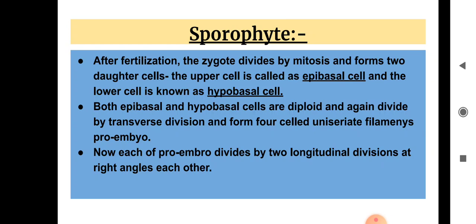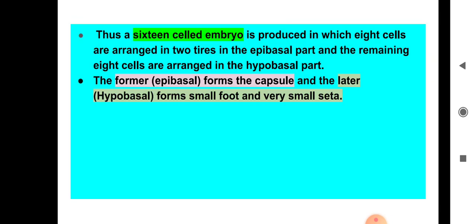To summarize development: transverse divisions produce the 4-celled uniseriate pro-embryo; two longitudinal divisions at right angles give 8 then 16 cells. The upper cells form the capsule, and the lower cells form the small seta and foot.